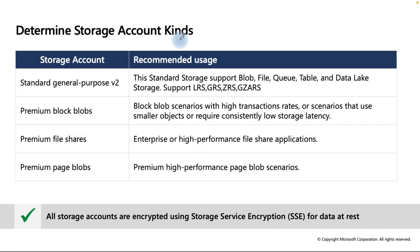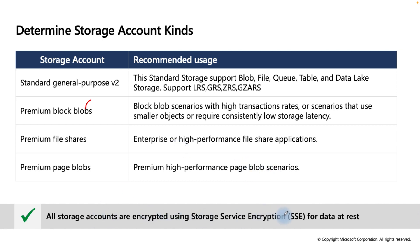Now let's look at storage account kinds available in the Azure portal. Standard General Purpose v2 supports all blob, file, queue, and table services, and supports redundancy options LRS, GRS, ZRS, and GZRS. Premium Block Blobs are for high transaction rates or smaller objects requiring consistent low latency. Premium File Shares are for enterprise or high-performance file share scenarios. Premium Page Blobs offer high-performance page blob storage. All storage accounts are encrypted using SSE (Storage Service Encryption) by Microsoft.